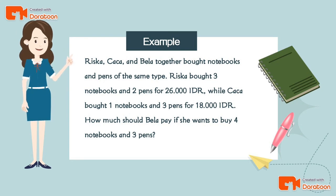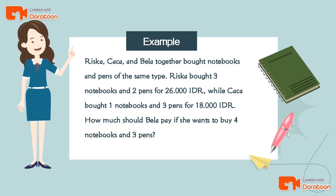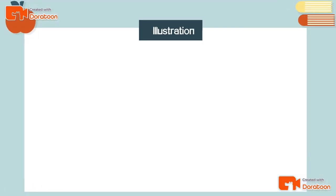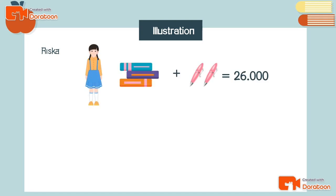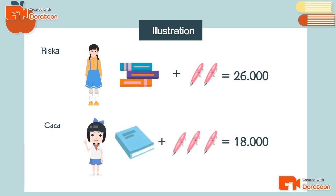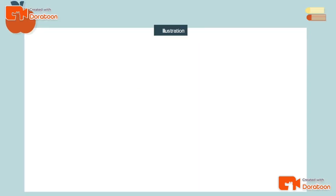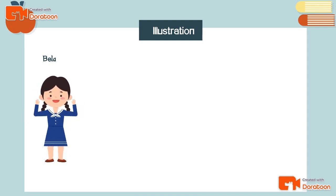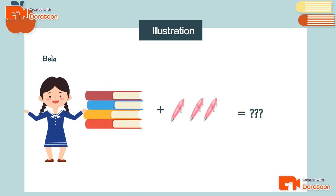and Bella together bought notebooks and pens of the same type. Rizka bought three notebooks and two pens for 26,000 Indonesian rupiah, while Caca bought one notebook and three pens for 18,000 Indonesian rupiah. How much should Bella pay if she wants to buy four notebooks and three pens?